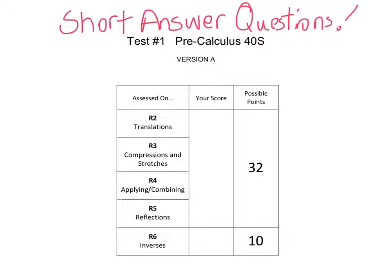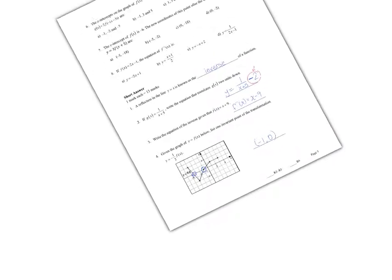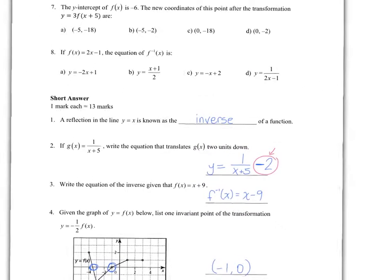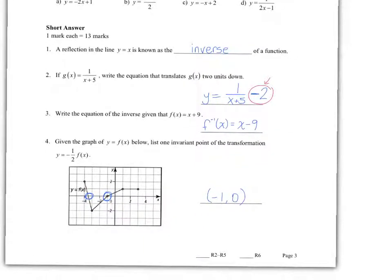Okay, here are the short answer questions for test 1 in pre-Cal 40. Alright, I'm going to zoom out here on the page. Start of the short answer here. Reflection in the line y equals x is known as the inverse of a function. That's just a standard thing that you should have had memorized in preparation for this test.